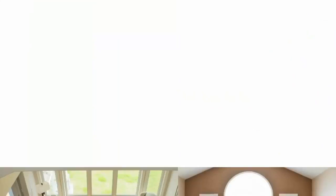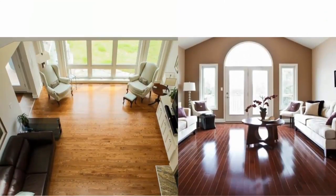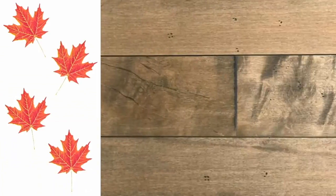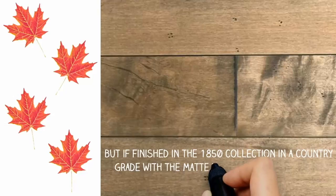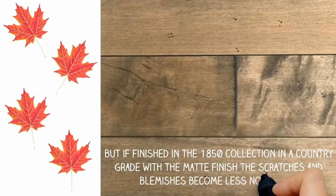The matte finish limits the light reflection on the floor. Woods with little or no grain, like maple, can't be wire-brushed, but if finished in the 1850 collection in a country grade with the matte finish, the scratches and blemishes become less noticeable.